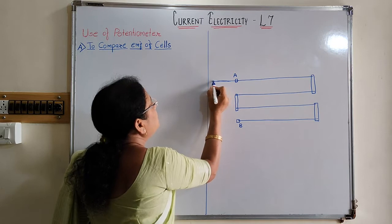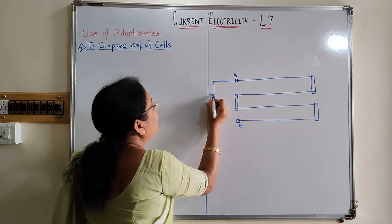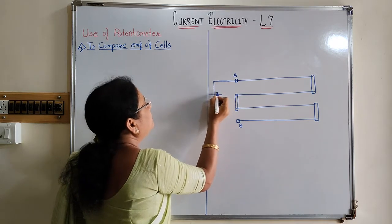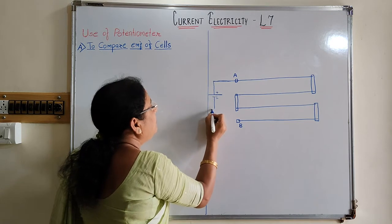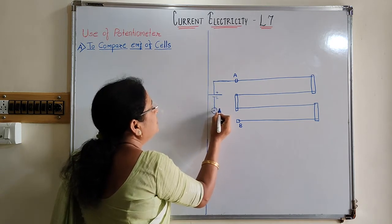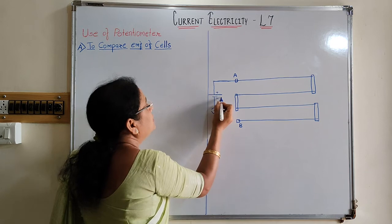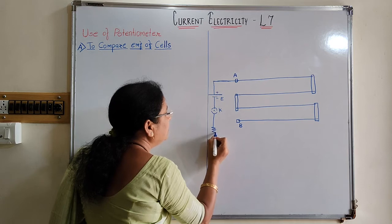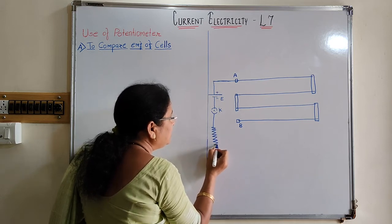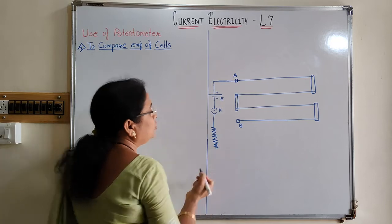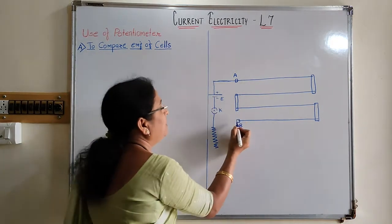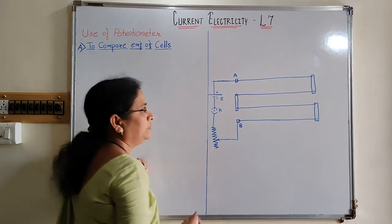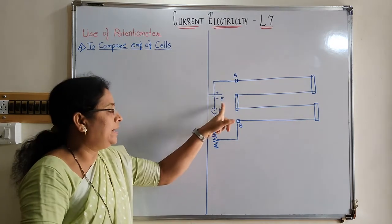Across this wire AB, suppose here we connect a battery — the high potential point, that is the positive terminal of the battery, we connect here. And the negative terminal of the battery we connect to a key. This is your battery having EMF. And here we connect a rheostat. With the help of the rheostat, we can vary the resistance in the circuit, so we can change the current flowing through the wire. The point B is connected to the variable terminal of the potentiometer. This is your battery, key, and rheostat.